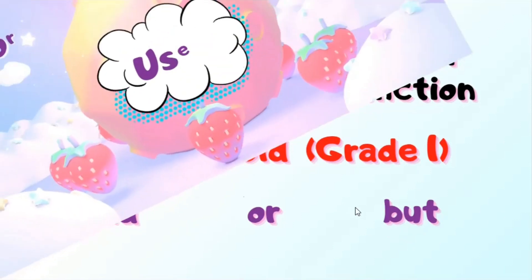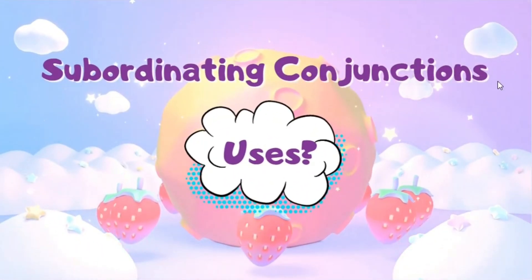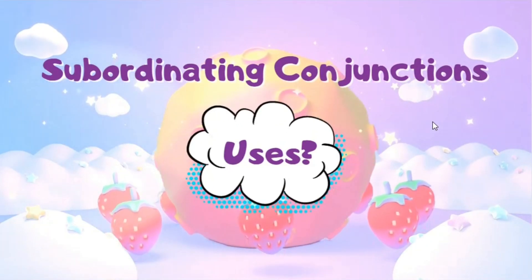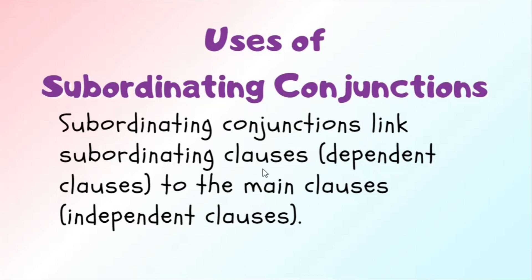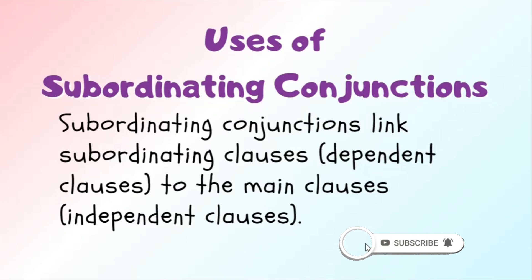Now let's check out the second type of conjunction — subordinating conjunctions. Again, they are used to connect things. But how and when do we use them? Subordinating conjunctions link subordinating clauses or dependent clauses to the main clauses, also called independent clauses. If you don't know what dependent or independent clauses are, don't worry — I will try to make it clear in this video. For a complete video on clauses, just write it in the comment box. To understand this concept, we need to see some examples.